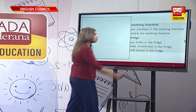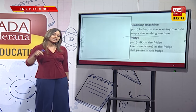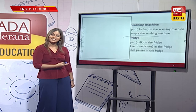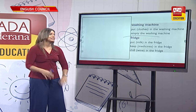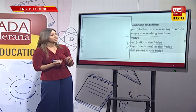So you had the freezer — remember yesterday we were talking about the freezer? Put the meat in the freezer, take it out from the freezer. And now we have the fridge. You can put something in the fridge, keep something in the fridge, and chill something in the fridge. Take it out from the fridge.